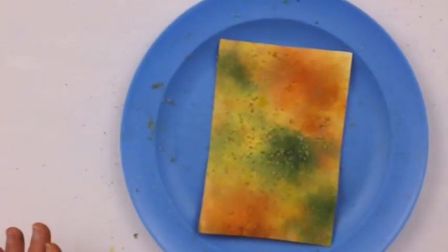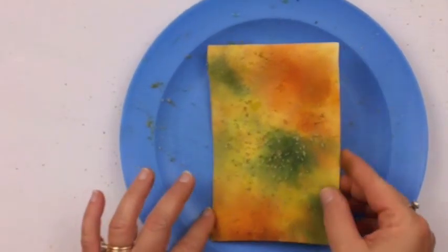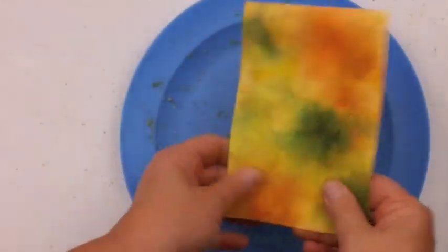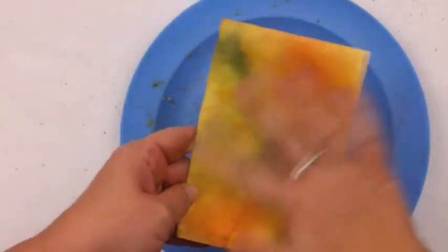Then once your paper has dried, you're simply going to shake off all of the salt. And you'll see that where the salt comes off, you end up with a color coming off too, and a very mottled background.